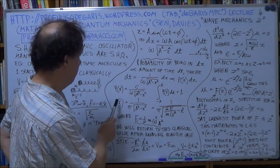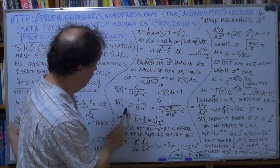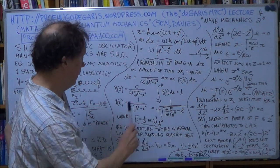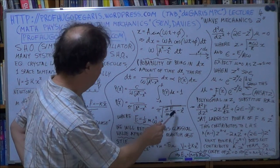So the probability density for classical mechanics is one over pi square root of this stuff. Now we rewrite that in the following form.